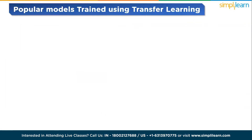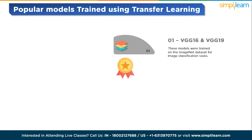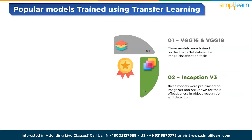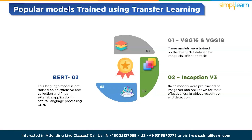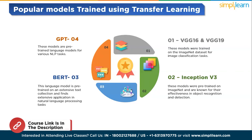Let's see some popular models trained using transfer learning. The first are VGG16 and VGG19, trained on the ImageNet dataset for image classification tasks. The second is Inception V3, pre-trained on ImageNet and known for its effectiveness in object detection and recognition. The third is BERT — Bidirectional Encoder Representations from Transformers — a language model pre-trained on extensive text collections with wide application in NLP tasks like sentiment analysis and named entity recognition. The fourth is GPT — the Generative Pre-trained Transformers series — pre-trained language models for various NLP tasks. These are just a few examples of pre-trained models used in transfer learning to accelerate training and improve performance.